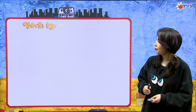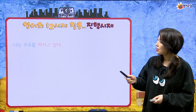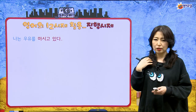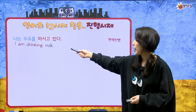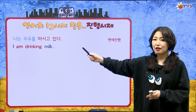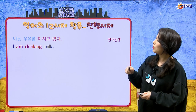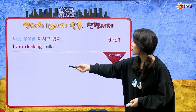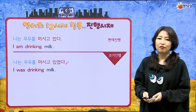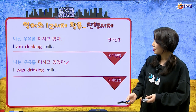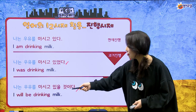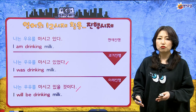진행 시제 예문을 볼게요. 현재: 나는 우유를 마시고 있어 — I am drinking milk. 과거: 나는 우유를 마시고 있었다 — I was drinking milk. be동사만 변하면 돼요. 미래: 나는 우유를 마시고 있을 것이다 — I will be drinking milk.